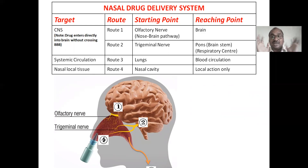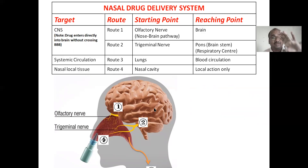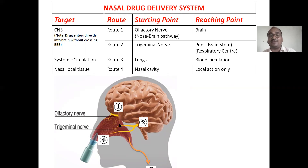The blood-brain barrier does not cover the olfactory nerve. So whatever medication you give, if it touches the olfactory nerve directly, through the olfactory nerve the drug will enter directly into the brain. That's why it is very, very important. The second pathway is the trigeminal nerve, which is also directly projecting from the brain into the nose, at the sides of the nasal cavity.